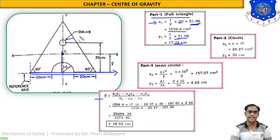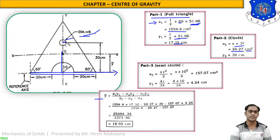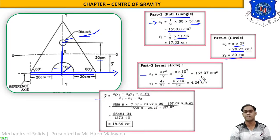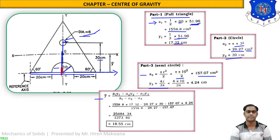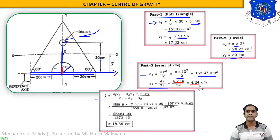For part 2, the small circle has diameter 6 cm, so radius = 3 cm. Area A2 = πr² = π × 3² = 28.27 cm². The distance from the center of the circle to the bottom is given as y2 = 30 cm. For part 3, the semicircle has radius 10 cm, so A3 = πr²/2 = π × 10²/2 = 157.07 cm². The CG of the semicircle is at 4r/3π from the base = 4 × 10/(3π) = 4.24 cm, so y3 = 4.24 cm.